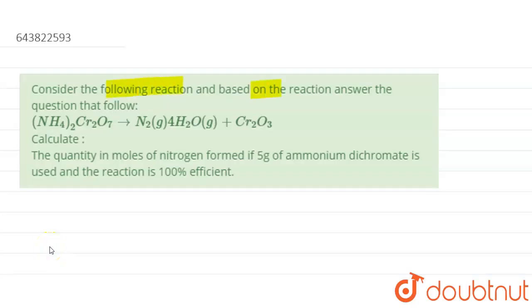...and based on the reaction, answer the following question. So here we have given the decomposition reaction of ammonium dichromate, and we know it's a very famous reaction for the production of nitrogen gas at the laboratory level.